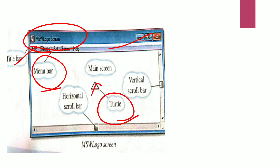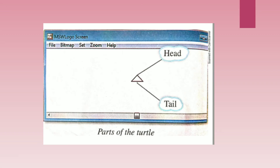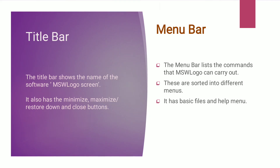The triangle you see on screen is known as the turtle. After that there is the main screen. There are also two scroll bars — a vertical scroll bar and a horizontal scroll bar. These are the components of the MSW Logo screen. The turtle has two parts: the upper pointed part is known as the head, and the back part is known as the tail.